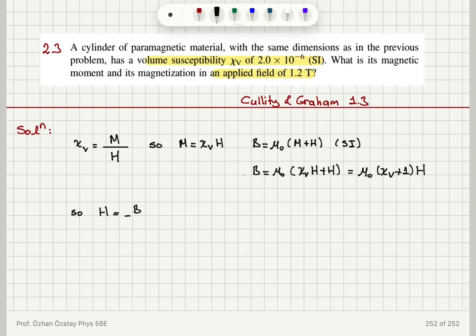So if I substitute the numbers here I obtain 1.2 tesla divided by 4π×10⁻⁷ henry per meter times (1 + 2×10⁻⁶). As you can see, 2×10⁻⁶ is rather small so we can neglect it. So this will be approximately equal to 9.55×10⁵ ampere per meter.